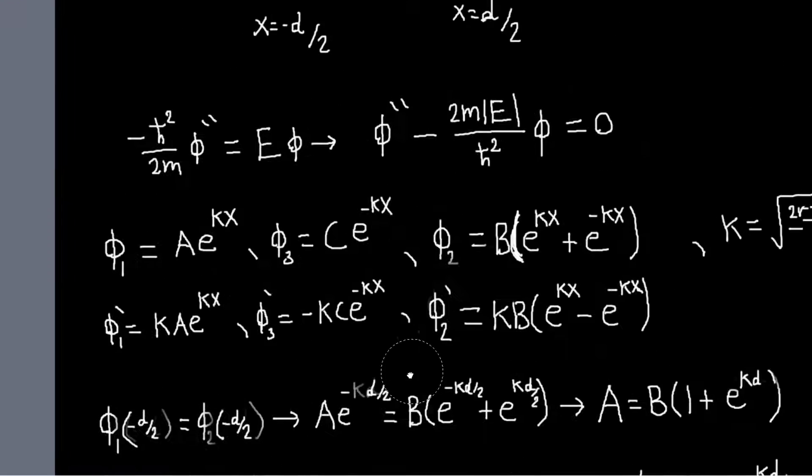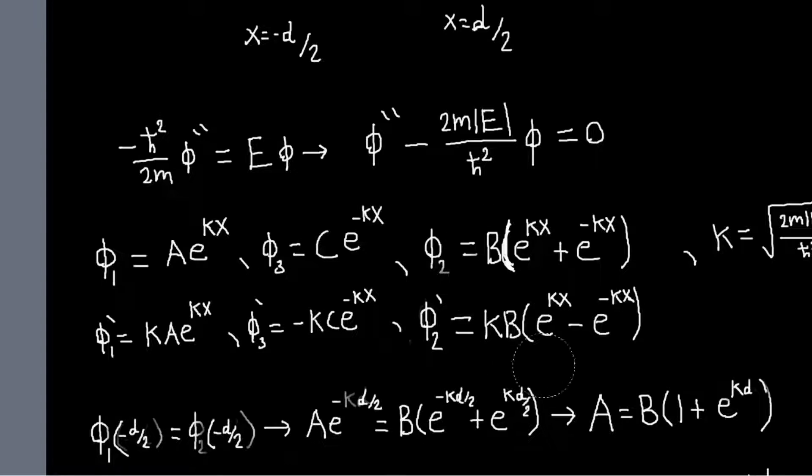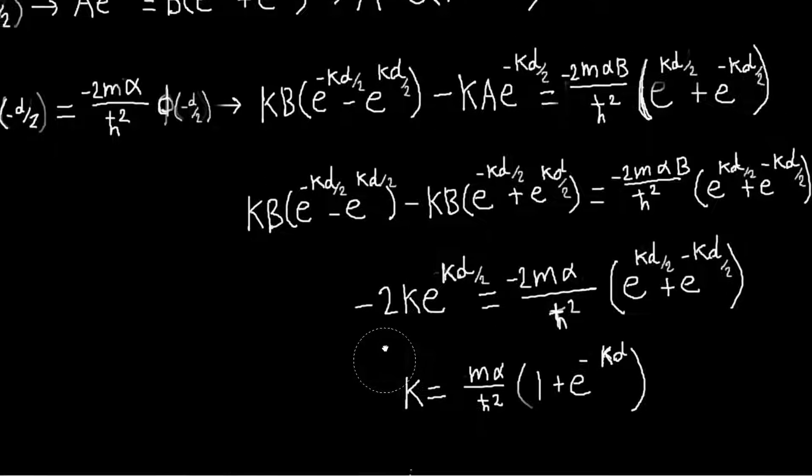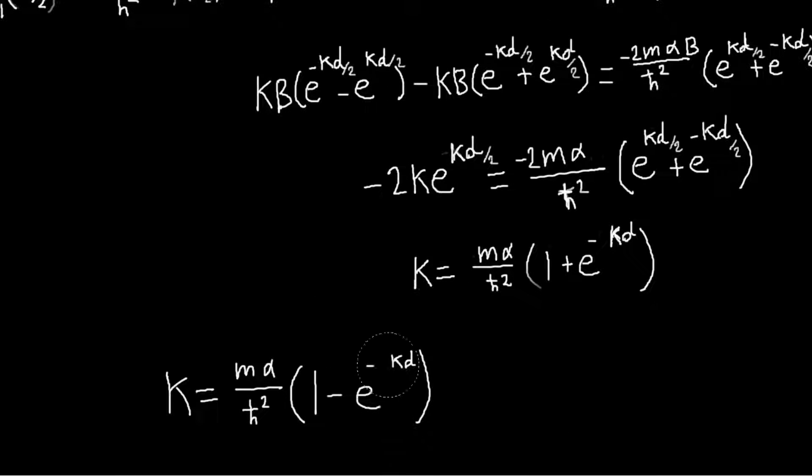Then you would have to go back and solve this problem again, using the odd solution. And if you did that, everything would work out almost the same, only you would get, for the transcendental equation, this equation. So it's almost the same, there's just a minus here instead of a plus.